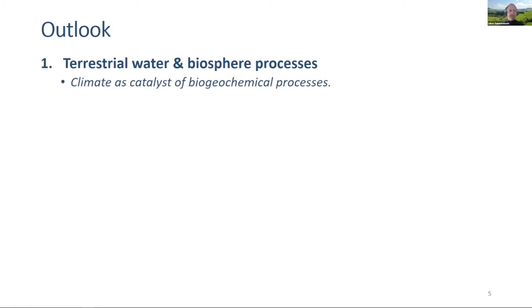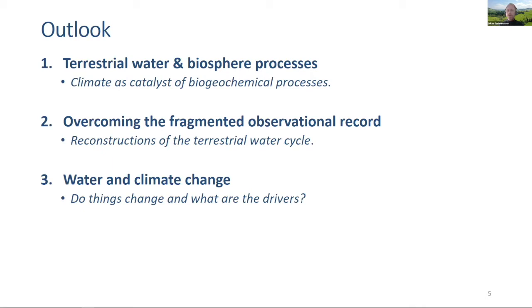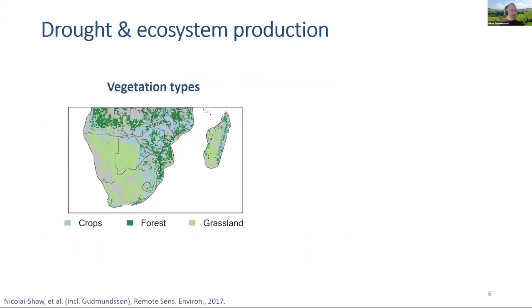In the remainder of this presentation, I'll first have a brief look at terrestrial water and biosphere processes. Based on this, we'll identify that some terrestrial water dynamics are relevant for climate change. But understanding climate change is today still impaired by a very fragmented observational record, and we'll investigate machine learning driven ways to overcome this fragmentation. Finally, we'll look at terrestrial freshwater and climate change and try to understand what the drivers are.